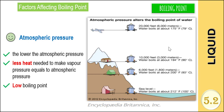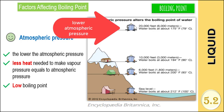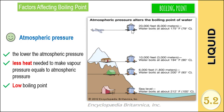These are the boiling points of water at different atmospheric pressures. As we go higher, the atmospheric pressure decreases. The lower the atmospheric pressure, the lower the boiling point; the higher the atmospheric pressure, the higher the boiling point. This is because at lower atmospheric pressure, less heat is needed to make the vapor pressure equal to the atmospheric pressure, which is why the boiling point is lower.